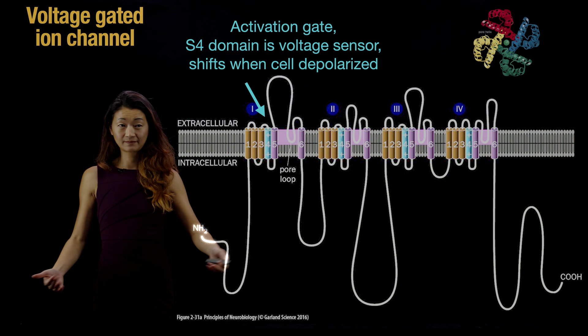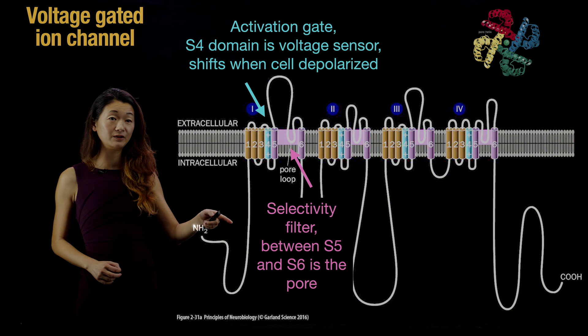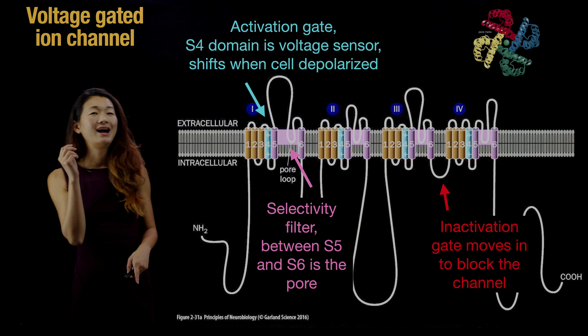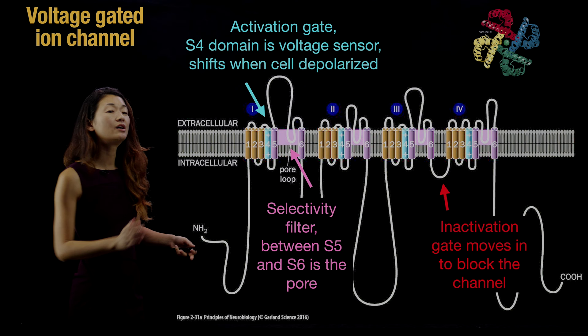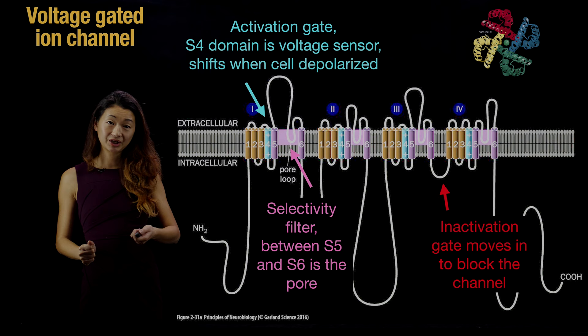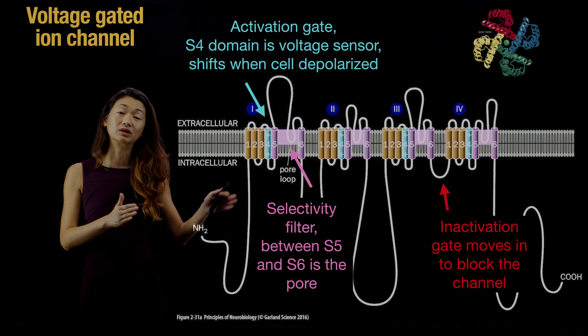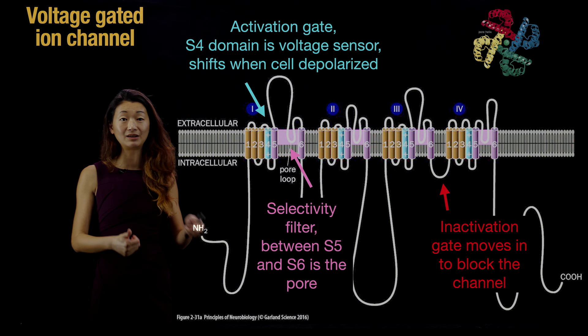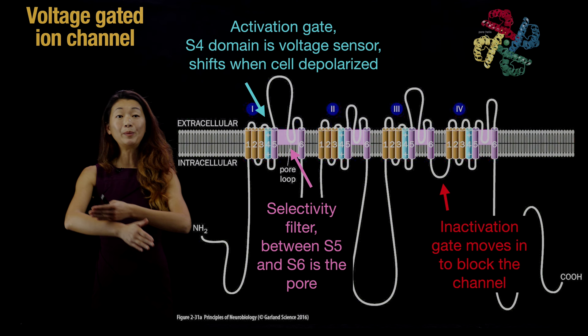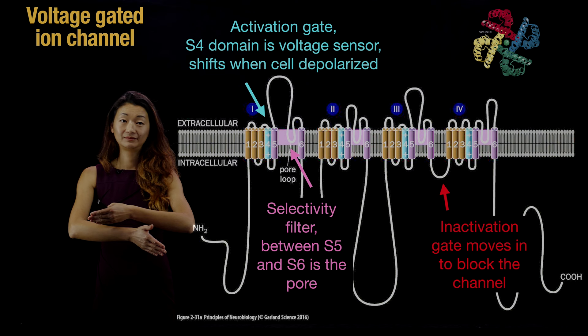This channel has one more trick: in addition to being voltage-gated, it also has an inactivation gate, which is essentially on a timer. When the pore has been open for a little while, the inactivation gate moves in and blocks the channel. So even if the cell is still depolarized, this ion channel will close. It has two fancy features: a voltage-gated activation gate, and an inactivation gate. So when there's a depolarizing event, this channel opens, lets ions through, and then after a little while it closes.